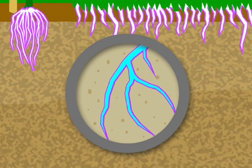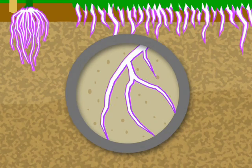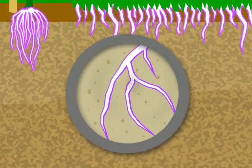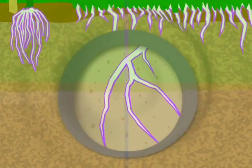The film has also been shown to travel with roots as they grow. Thus, as your plants respond to changing moisture conditions, you can be assured that they will benefit from Hydrotain's lasting effects.